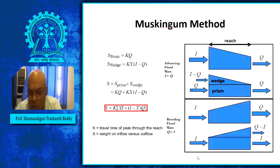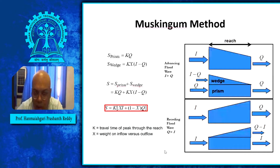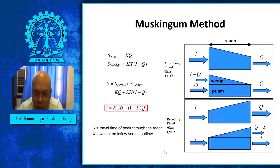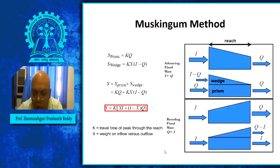Hydrologic channel routing is carried out by the Muskingum method, named after a professor who invented this hydrograph channel routing approach. In the figure, inflow is coming in and there is outflow at the downstream end.